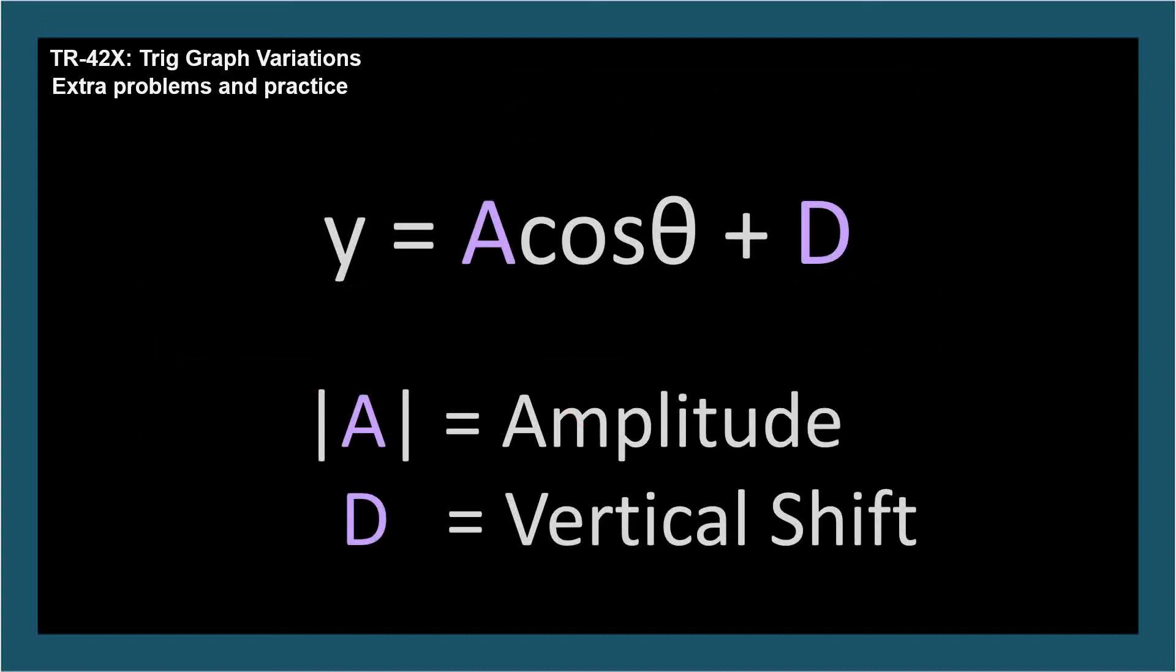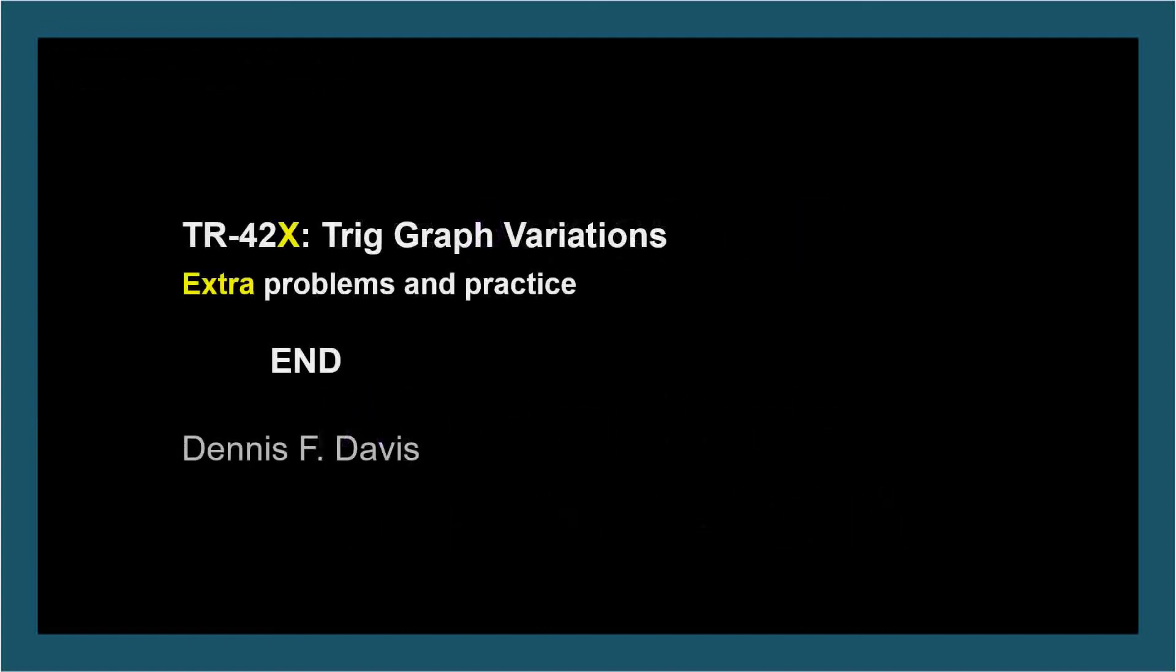Amplitude and vertical shift, the A and D parameters respectively, are very easy to read from either an equation or a graph, and so it's easy to go from one to the other. We'll have to see you later. Thank you.